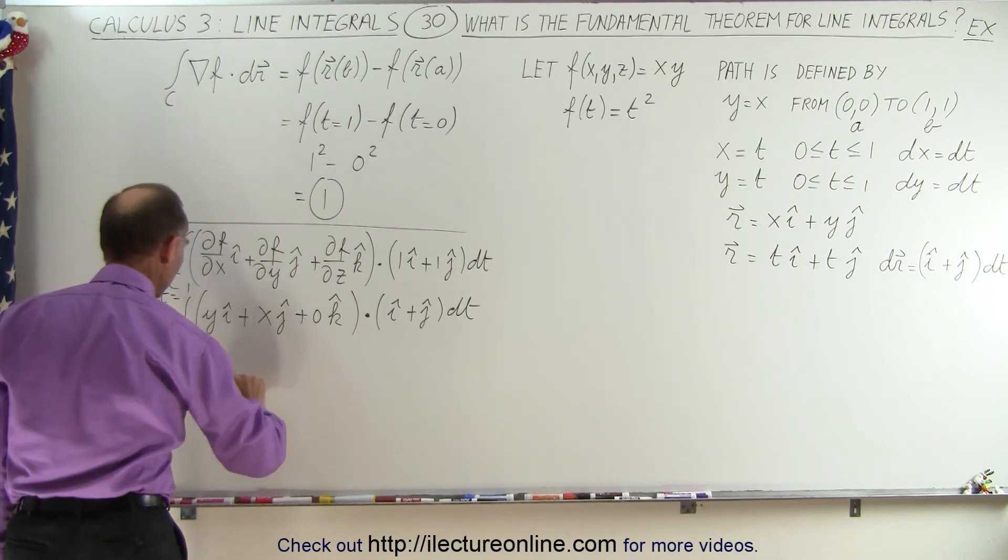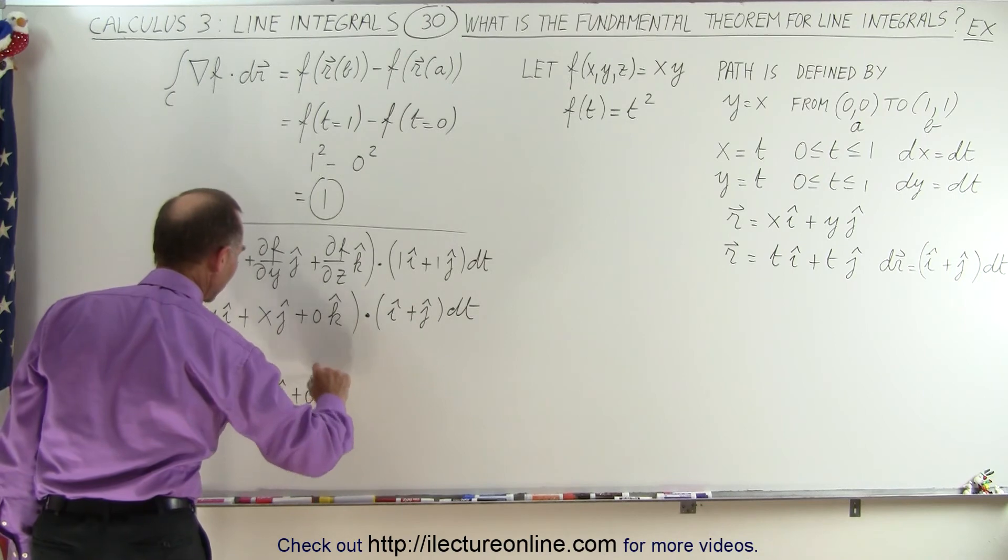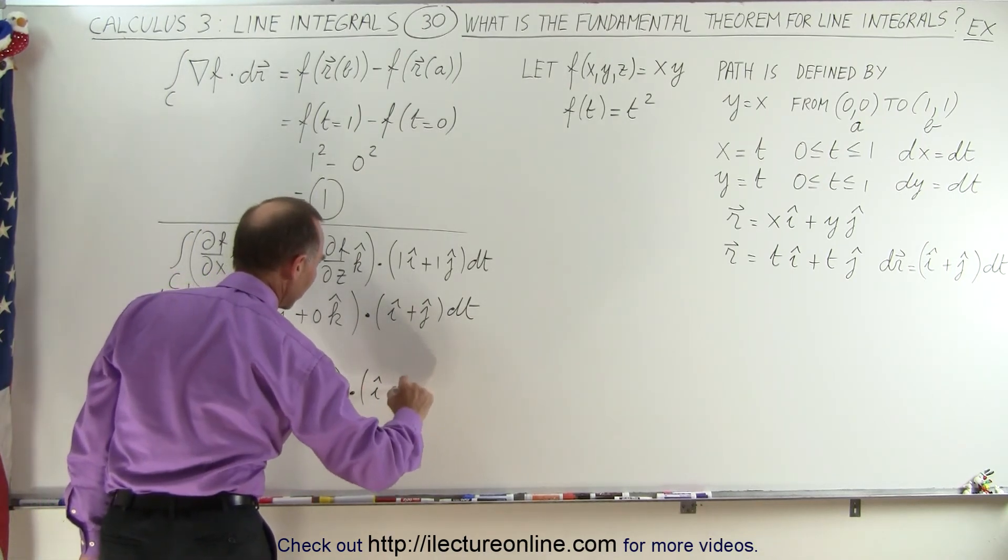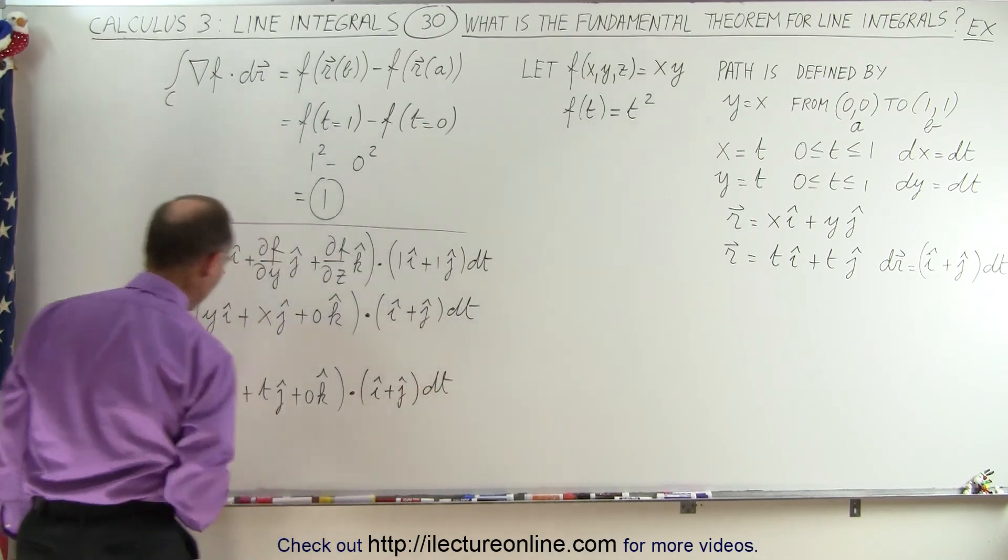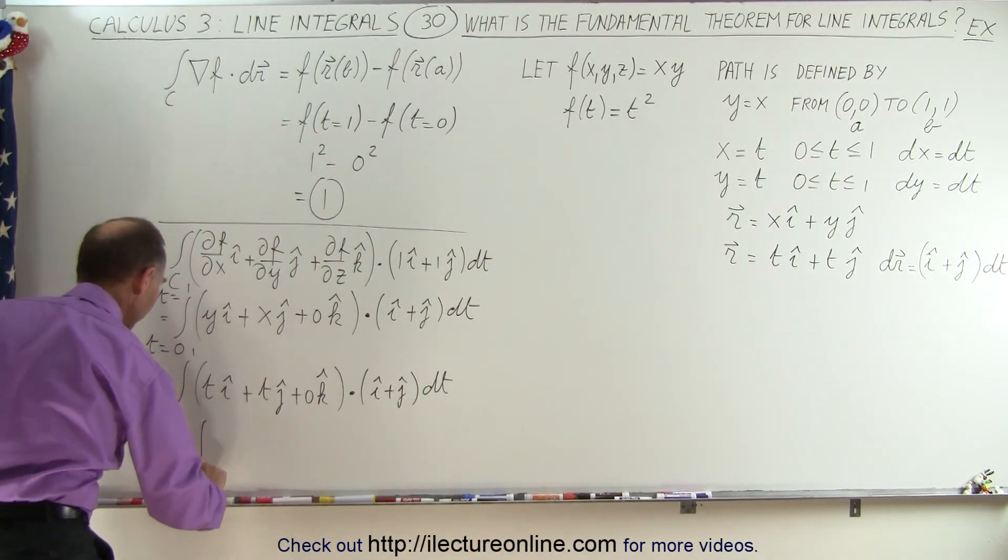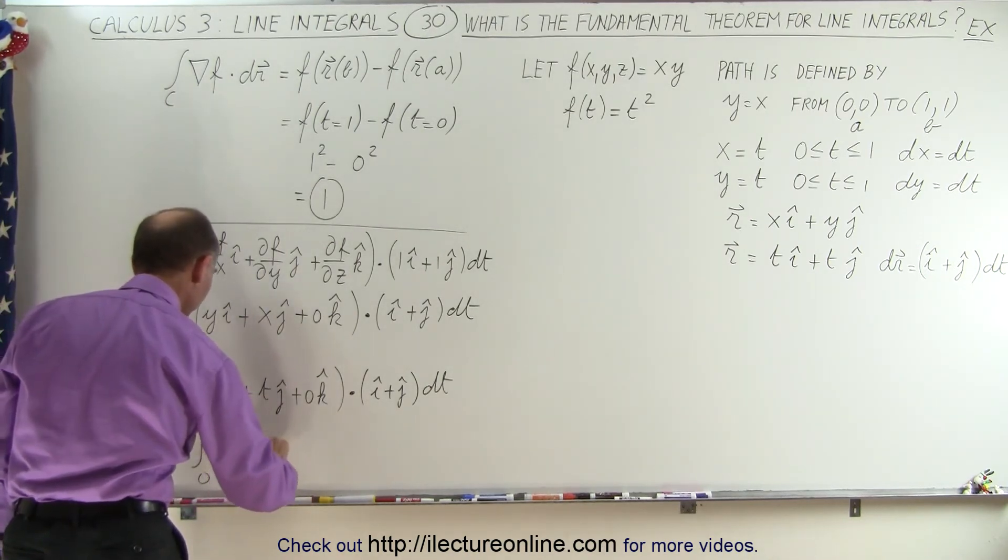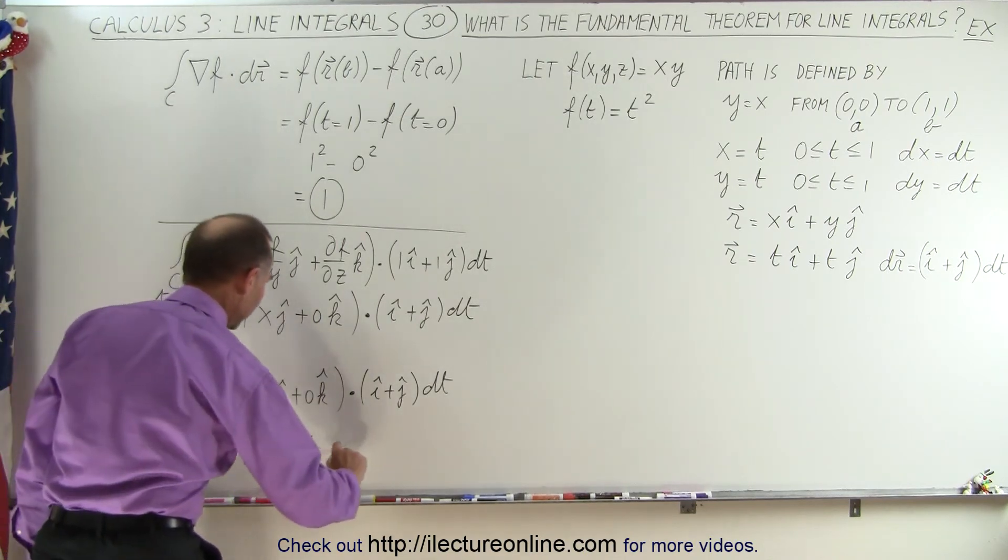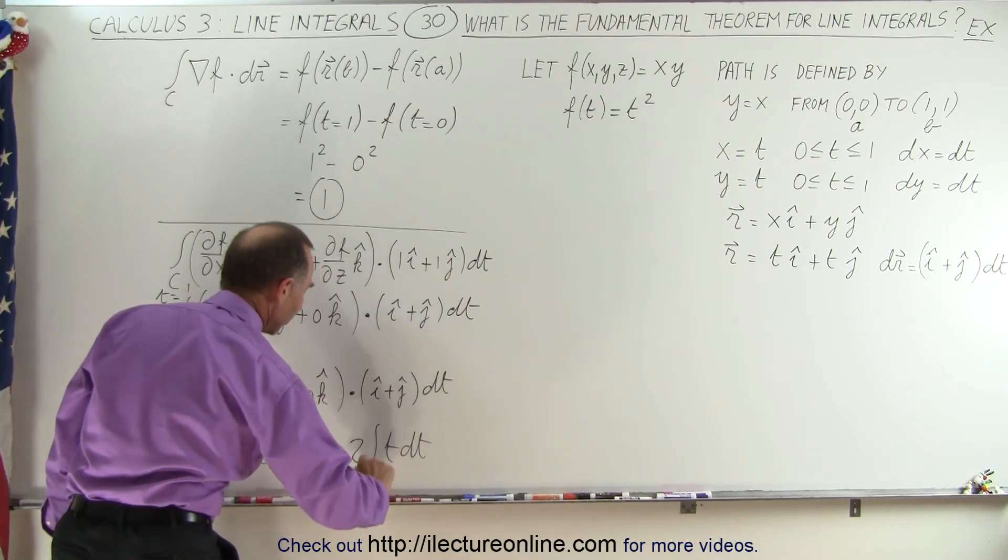of t in the i direction plus t in the j direction plus 0 in the k direction dotted with i times i plus j dt, and so this becomes equal to the integral from 0 to 1 of t plus t multiplied times dt, which is equal to 2 times the integral of t dt from 0 to 1.